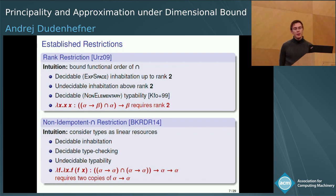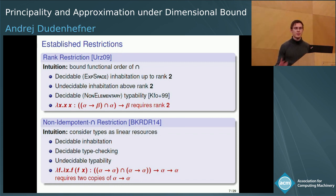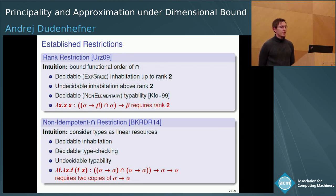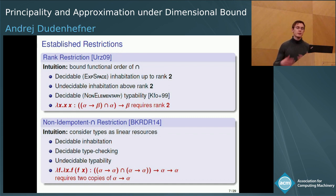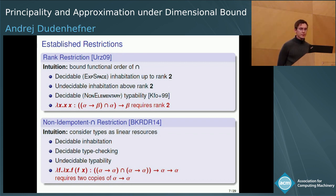Interestingly, for the rank restriction it strangely changes behavior from rank two to three — you go up one rank and immediately go from decidability to undecidability, so in a sense you take some infinite step there. Also, strangely, rank has no real connection to normal forms, whereas intersection type systems usually have a strong connection to normal forms. So this restriction sometimes doesn't work as well as one would hope.